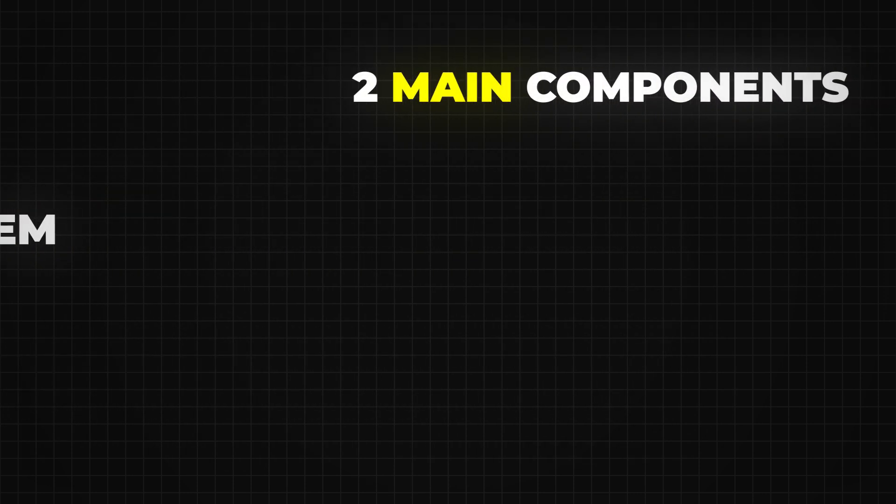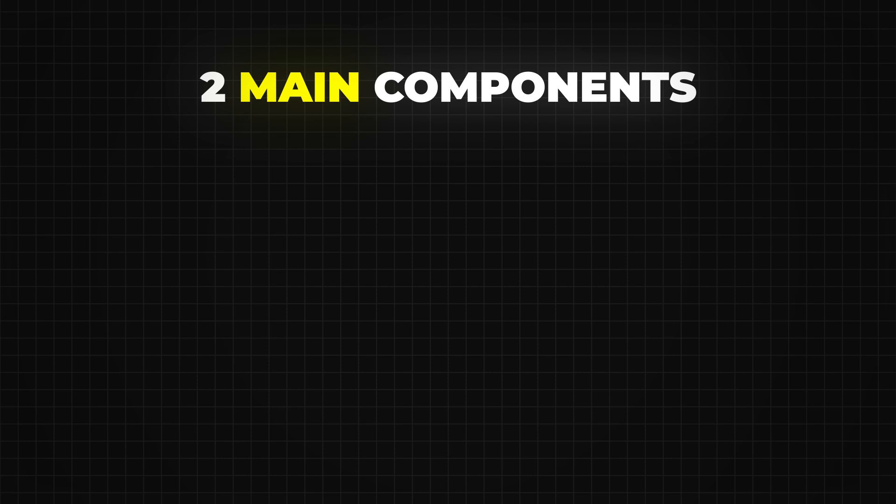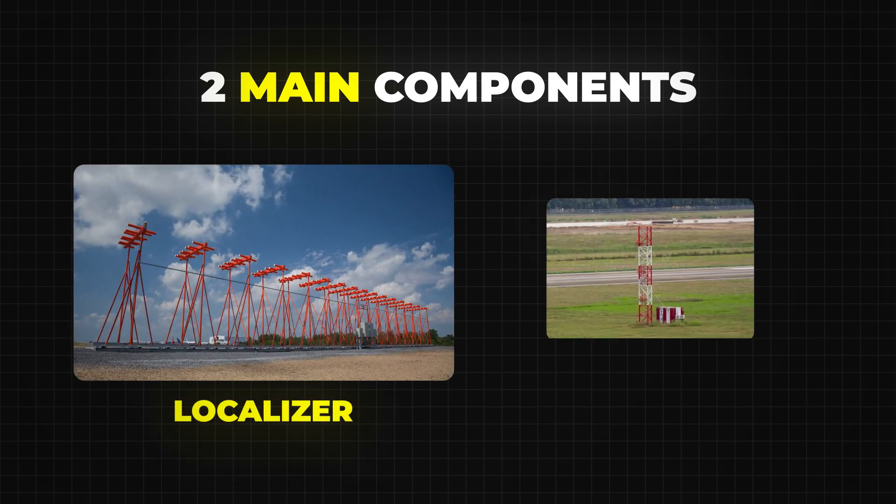Let's start with the basics. The ILS has two main components, the localizer and the glide slope.